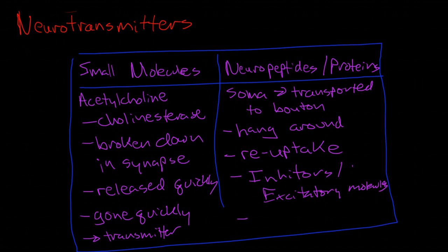Now these neuropeptides and neurotransmitter proteins tend to be either IPSPs or EPSPs, whereas acetylcholine and other small molecules are just transmitters to transmit the action potential.